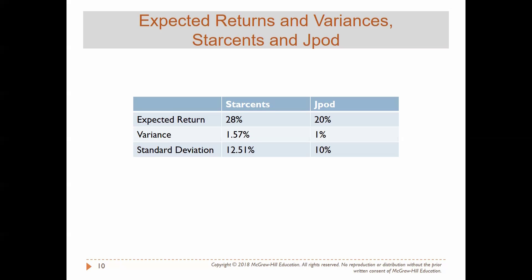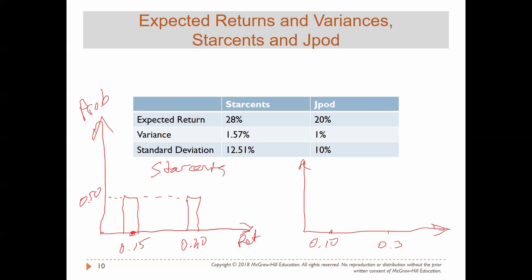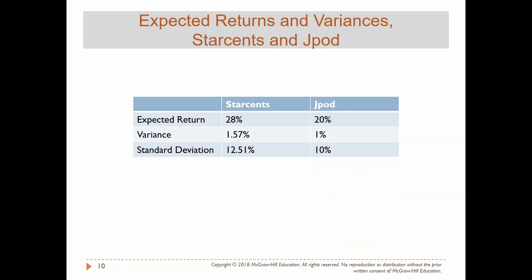Let me summarize what we've done. We assumed StarSense has two possible returns: 15% with 50% probability and 40% with 50% probability. Similarly, JPOD has returns of 10% and 30%, each with 50% probability. We calculated their expected returns as 28% and 20% respectively, and their standard deviations as 12.51% and 10% respectively. So we have two stocks' return data with corresponding probabilities, and we've calculated expected return and standard deviation for both.